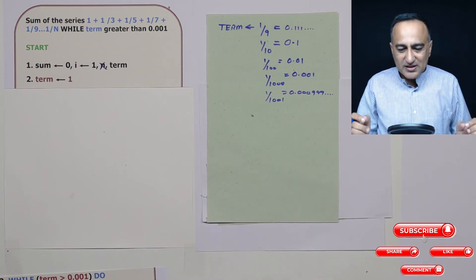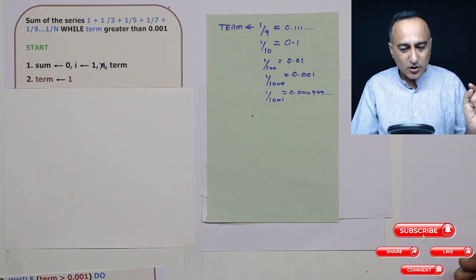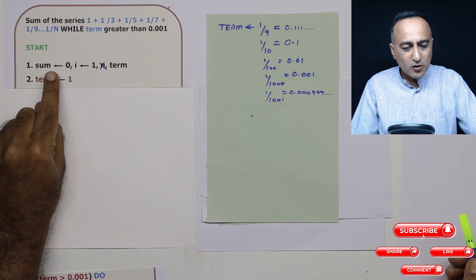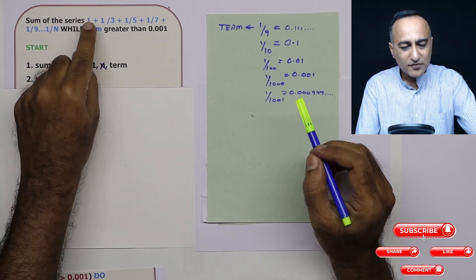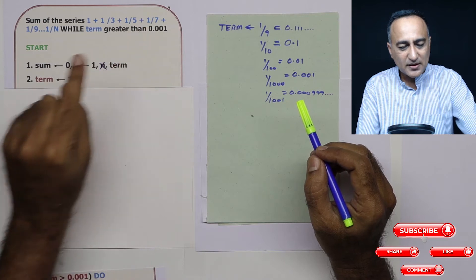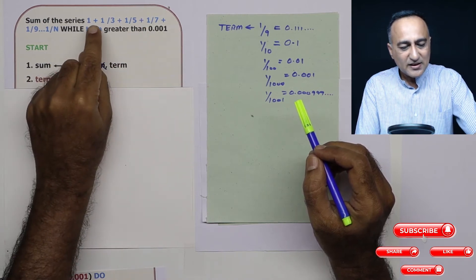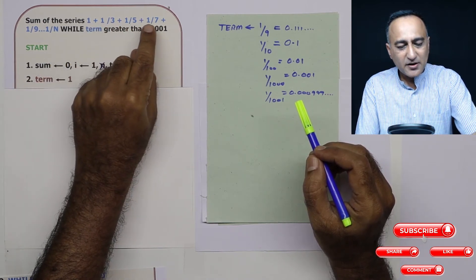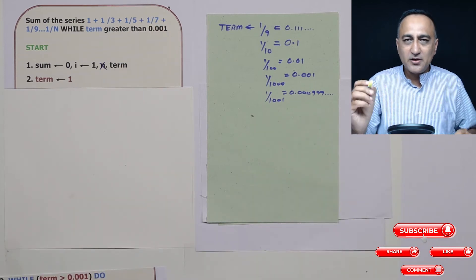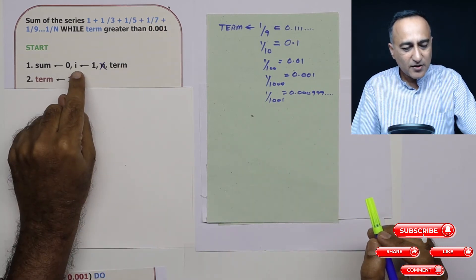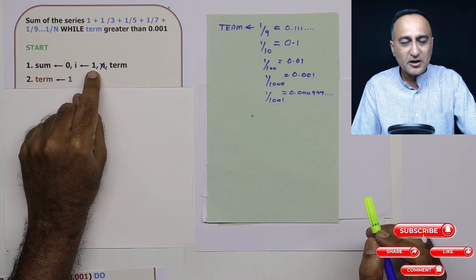So based on this logic, let us understand what are the variables required. I need a variable called sum to store the sum of this particular series. The denominator is increasing by two every time, whereas the numerator is constant. So I will have a variable i which represents the denominator.